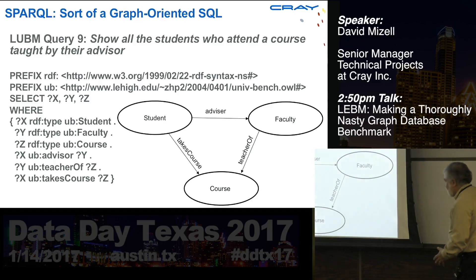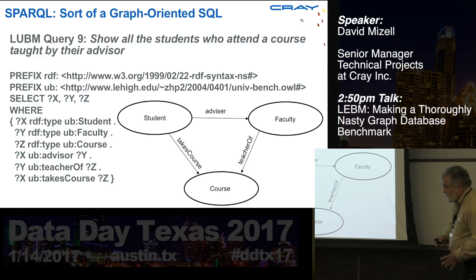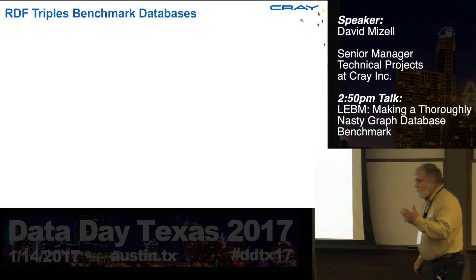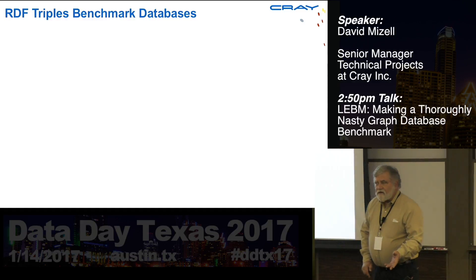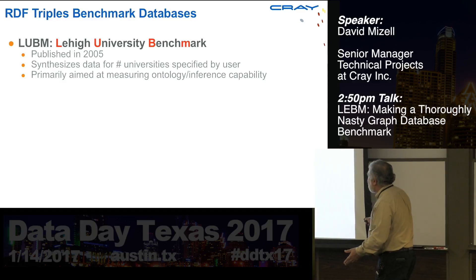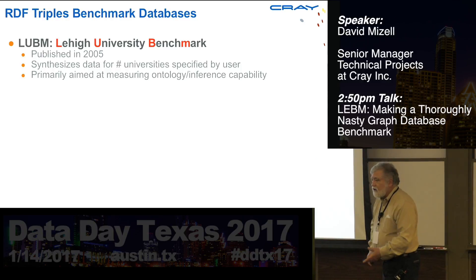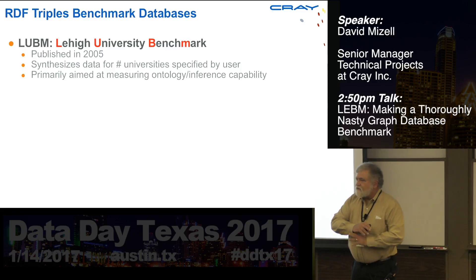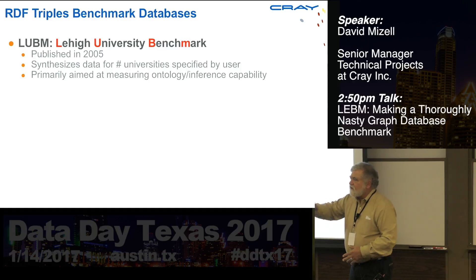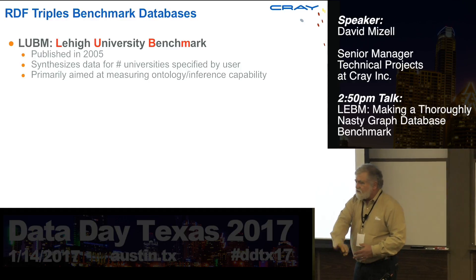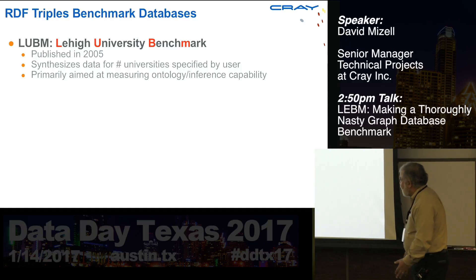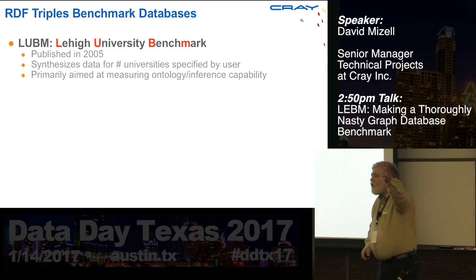Unless you've designed a database explicitly to handle that kind of thing. There are several popular benchmark databases around. I'm mostly talking about LUBM today — the Lehigh University Benchmark, first published in 2005. It synthesizes data about a university: this professor teaches this course, this student is in this department, and so on. You give it an argument of how many universities you want synthesized.